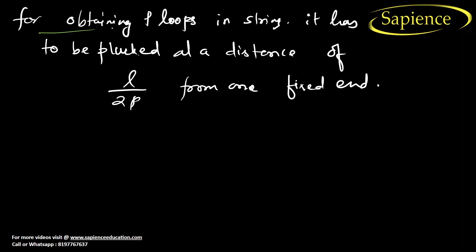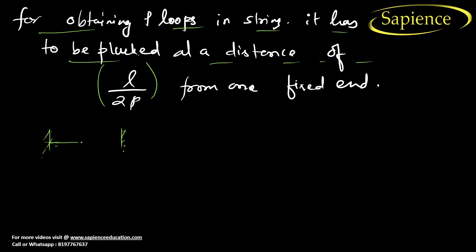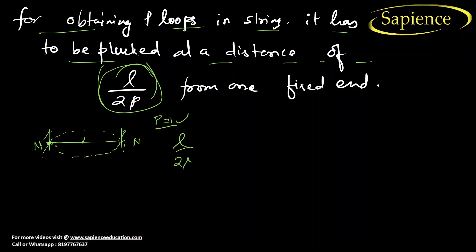To obtain P loops in a string, it must be plucked at a distance of L by 2P. For example, if I want one loop (P = 1), I should apply the plucking force at L by 2 × 1, which is L/2. If I pluck at a distance of L/2 from the end, I will get one loop with one node at each end.